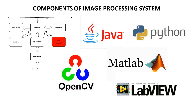Software. In the previous section, we have seen that image processing is done using computer algorithms. These algorithms can be implemented in various programming languages and softwares. For example, Java, Python, and OpenCV are the widely used programming languages for image processing applications. We can also use softwares like MATLAB and LabVIEW.